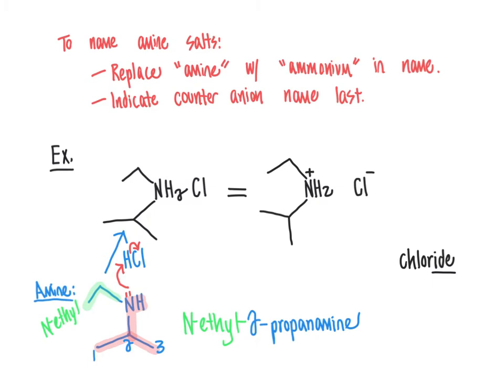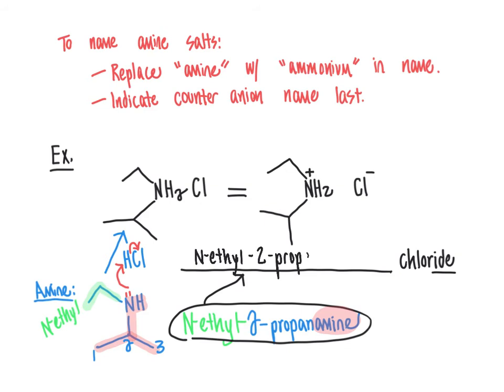Now to refer to the salt instead of our starting material, all we would need to do is convert the term amine at the end of this name to ammonium. So it becomes N-ethyl-2-propanammonium, and then don't forget the term chloride there. We've just replaced the term amine with the term ammonium. That is the way we go about naming these amine salts.